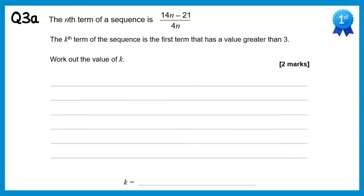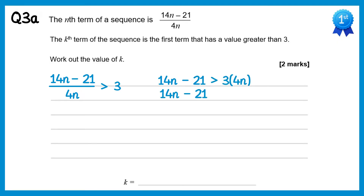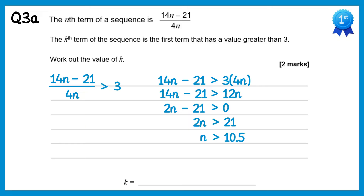For this question we want the first term that's greater than 3, so we want the nth term to be greater than 3. Multiplying both sides by 4n, the left becomes 14n minus 21, and the right becomes 3 times 4n which is 12n. Subtracting 12n gives 2n minus 21 is greater than 0. Adding 21 gives 2n is greater than 21, so n is greater than 10.5. Since n must be an integer, k equals 11 — the eleventh term.